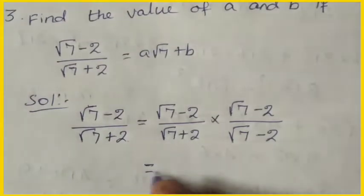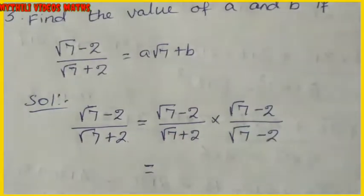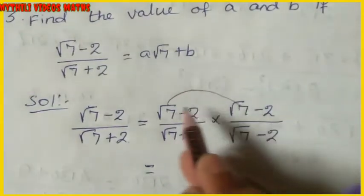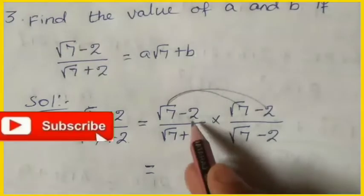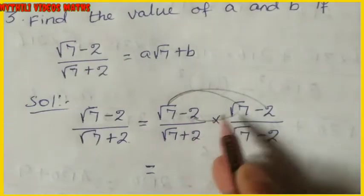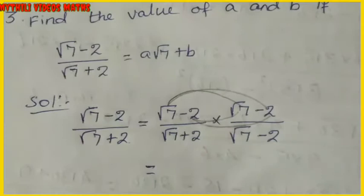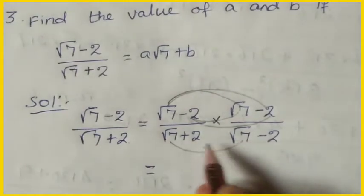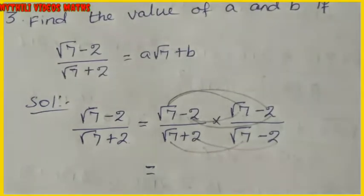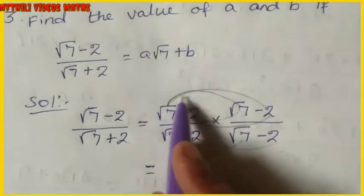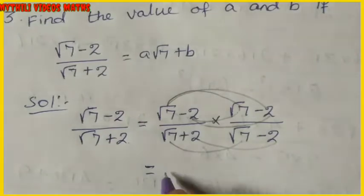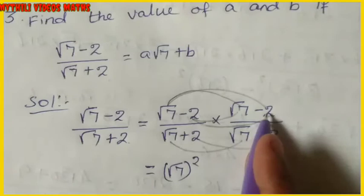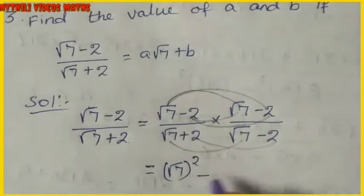Multiply numerator by numerator and denominator by denominator. In the numerator: first term with first term gives √7 whole square, then first term with second term gives −2√7.